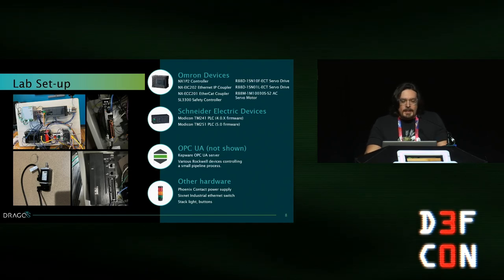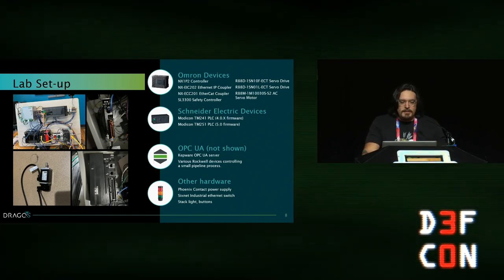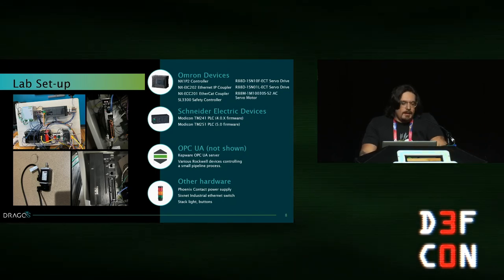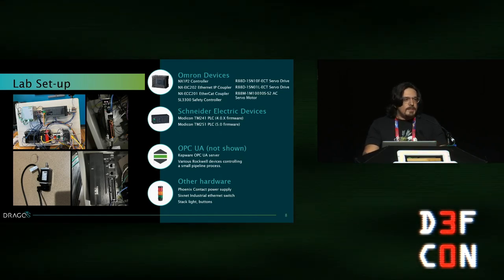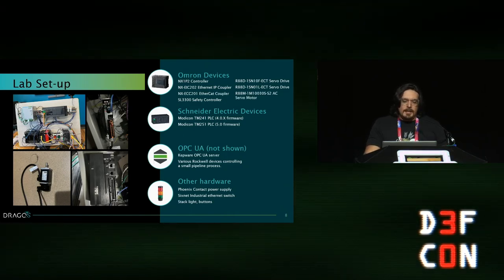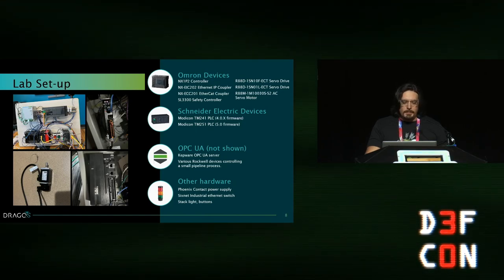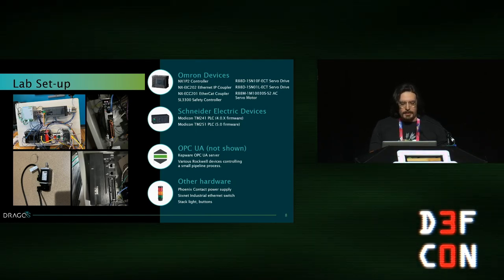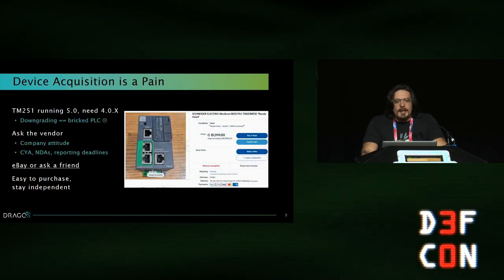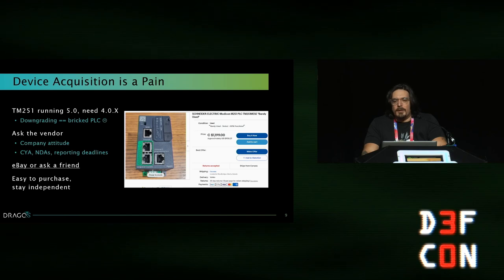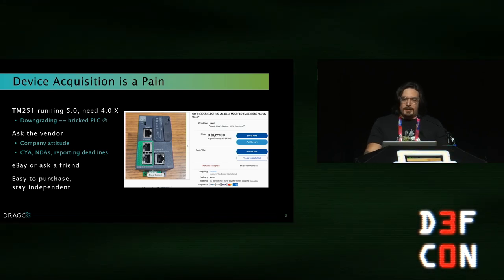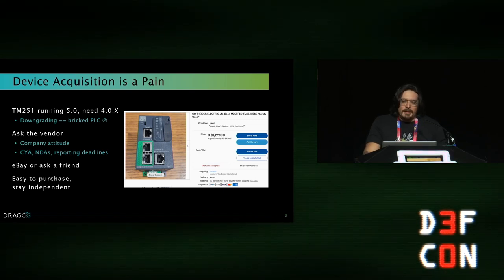In our lab, we set up an NX1P2 Omron controller with servo drives, a servo motor, EtherCAT couplers, and power supplies. For Schneider Electric, we had a TM241 and TM251 with two different firmware versions. We also set up an OPC UA server with a mock pipeline process — a Kepware server with Rockwell devices controlling a pipe and pump. We mostly bought devices off eBay or asked friends. Tom Van Norman from ICS Village shipped me a TM251, though it had the wrong firmware — we tried to downgrade and bricked the device.